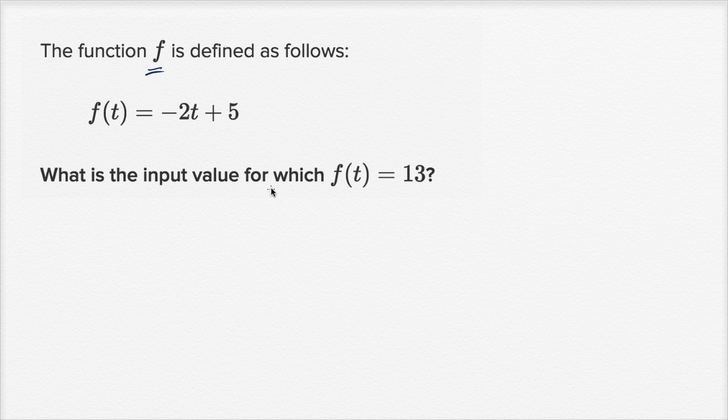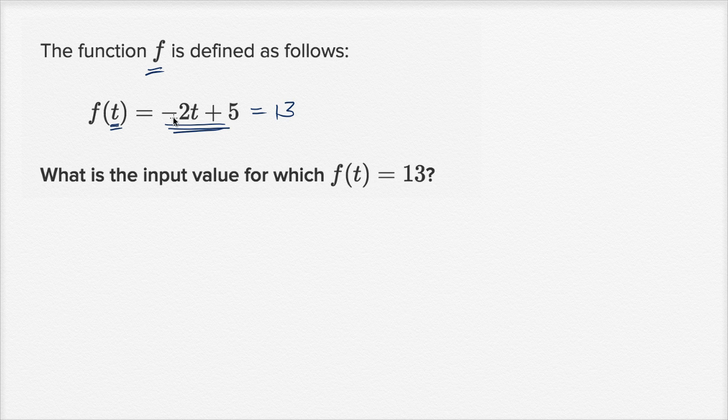So what is the input value for which f of t is equal to 13? So if f of t is equal to 13, that means that this thing over here is equal to 13 for some t, for some input. So we can just solve the equation negative two t plus five is equal to 13. So let's do that.